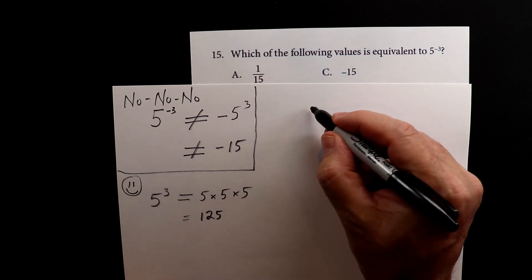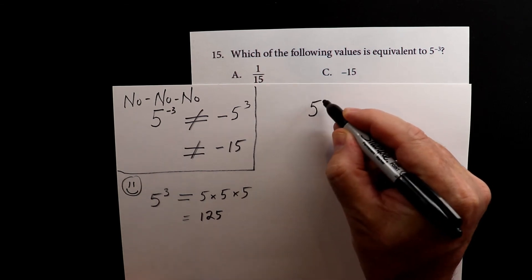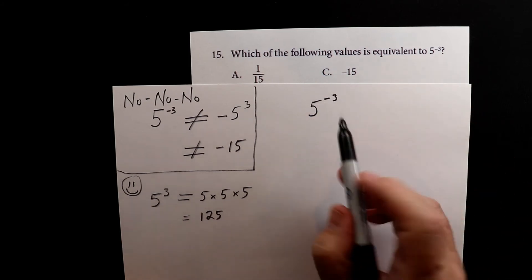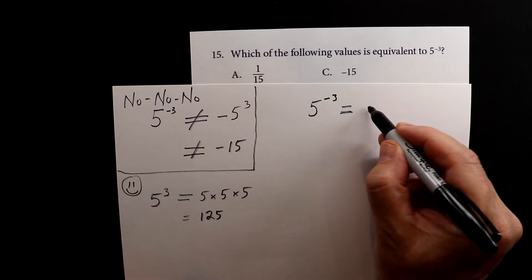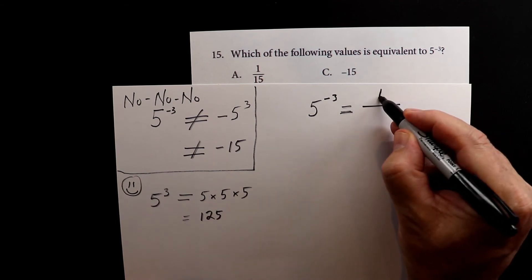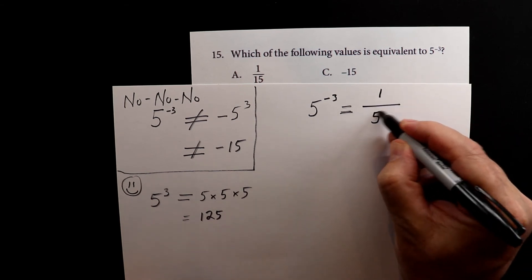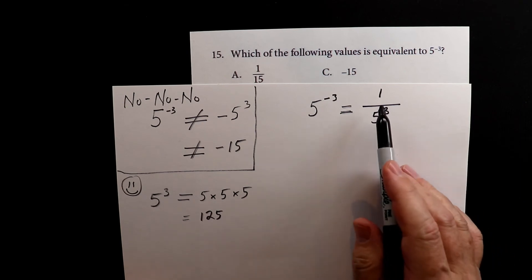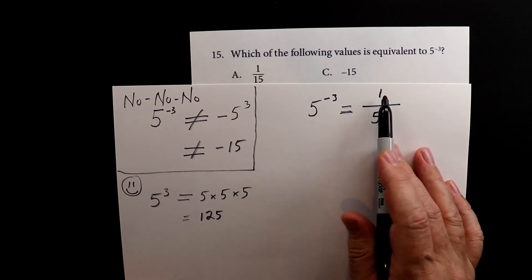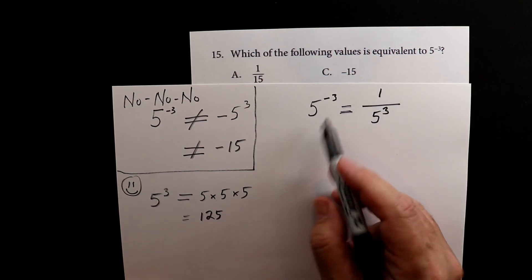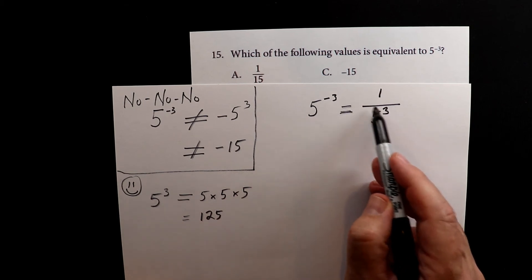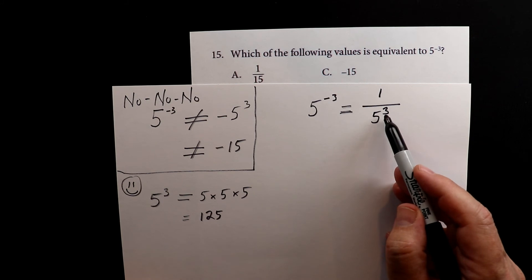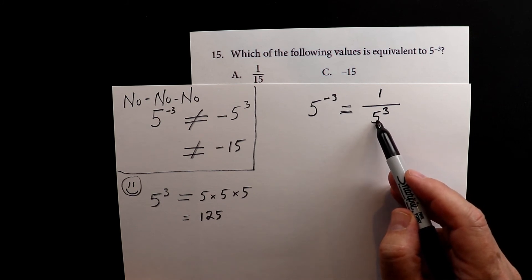The rule is, when you have 5 to the negative third, when you have a negative exponent, it's the same as 1 over 5 to the third. You're basically flipping it upside down. So we have 5 to the negative third. We put 1 on the top, draw the line, and then underneath in the denominator, we just have 5 to the third.